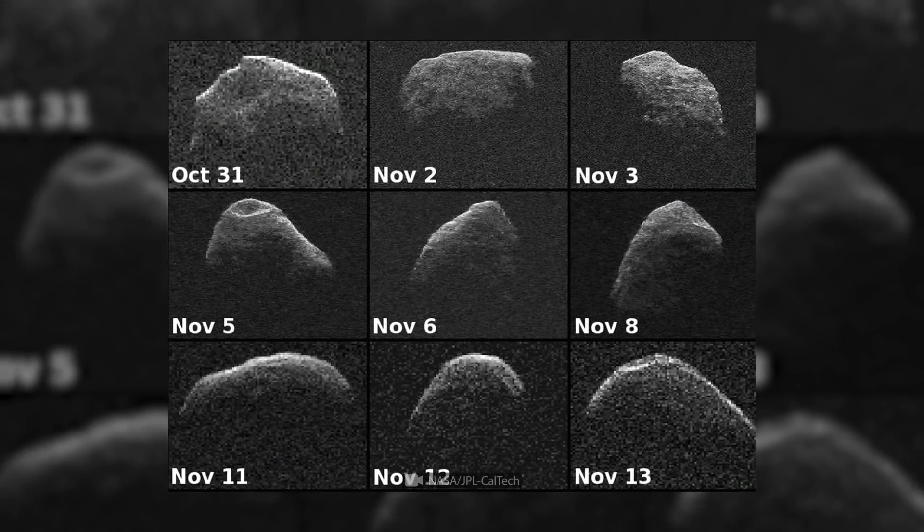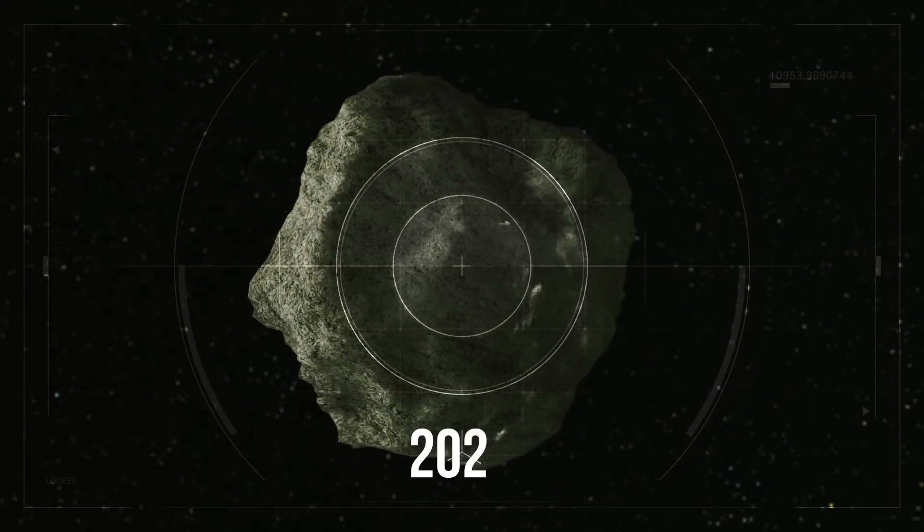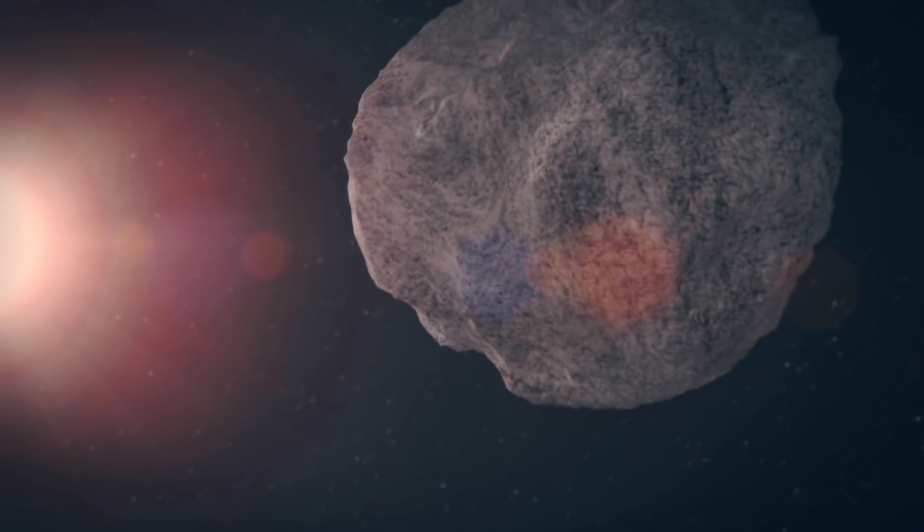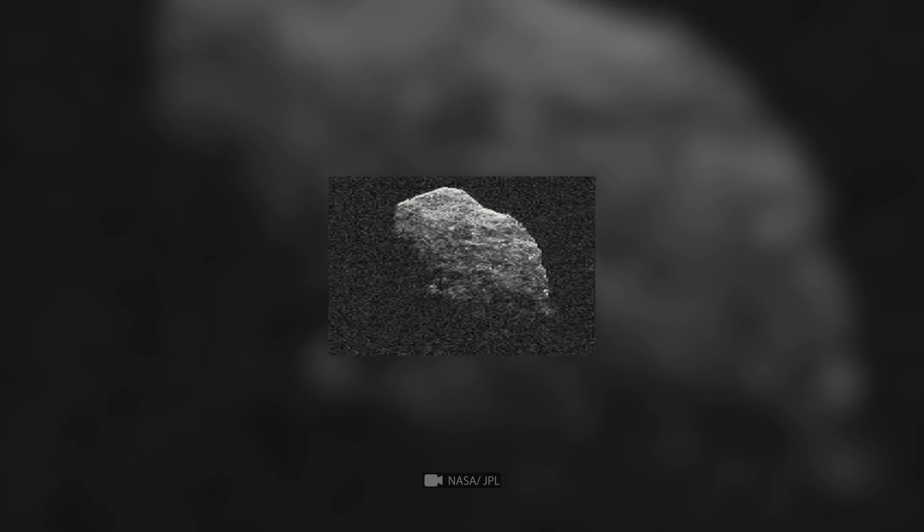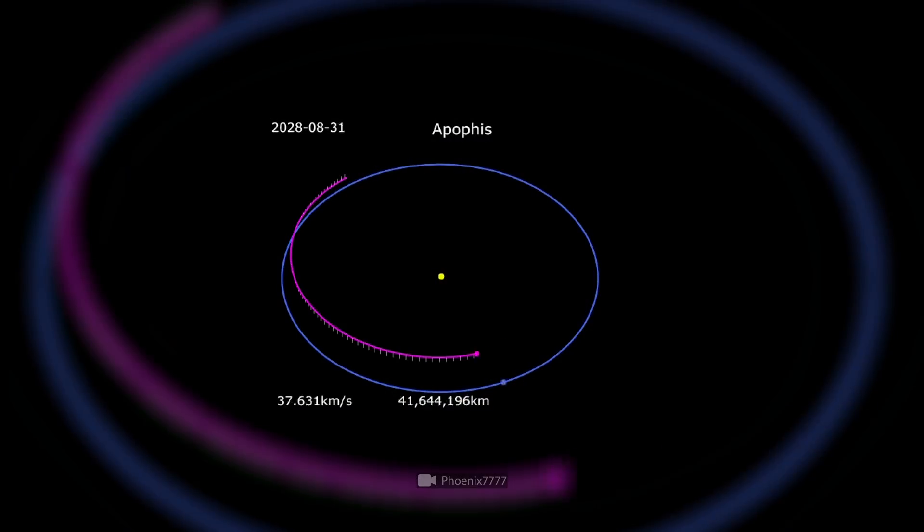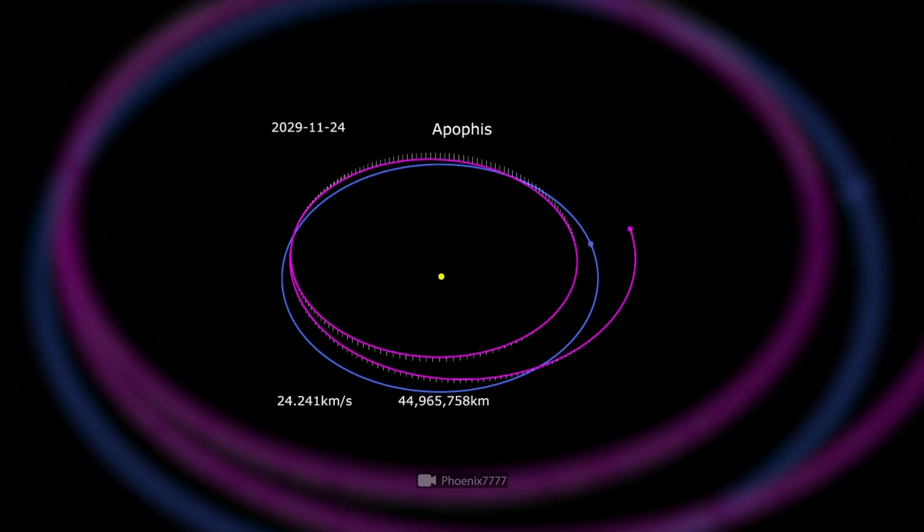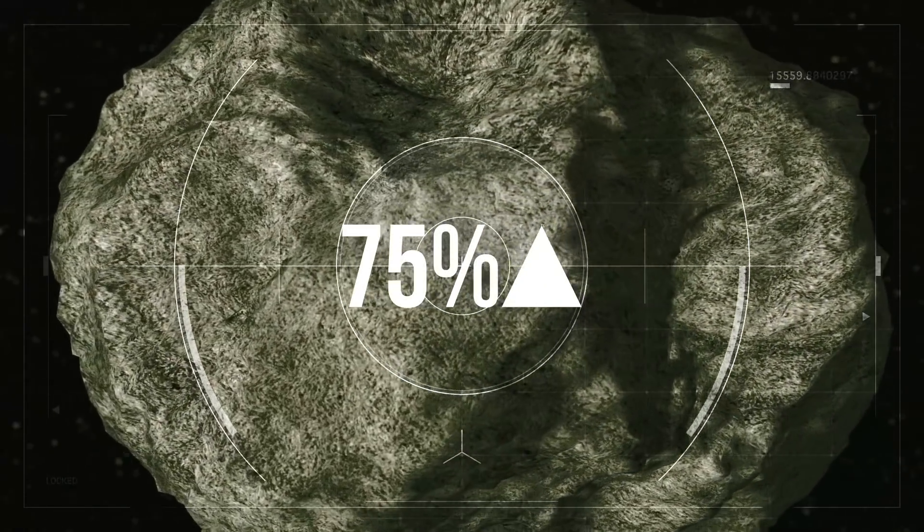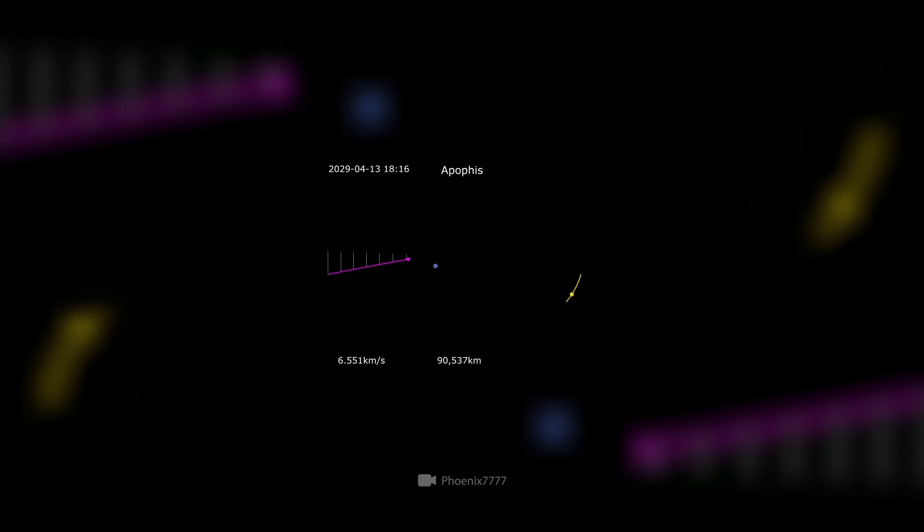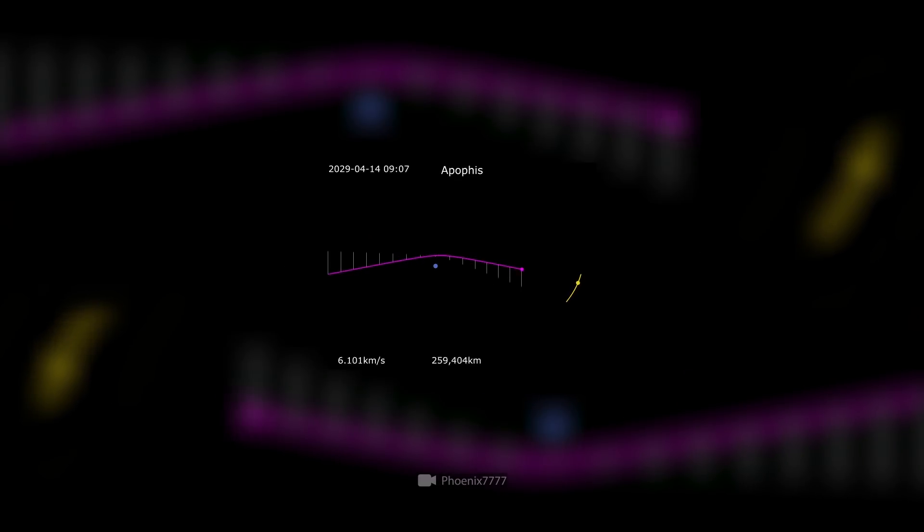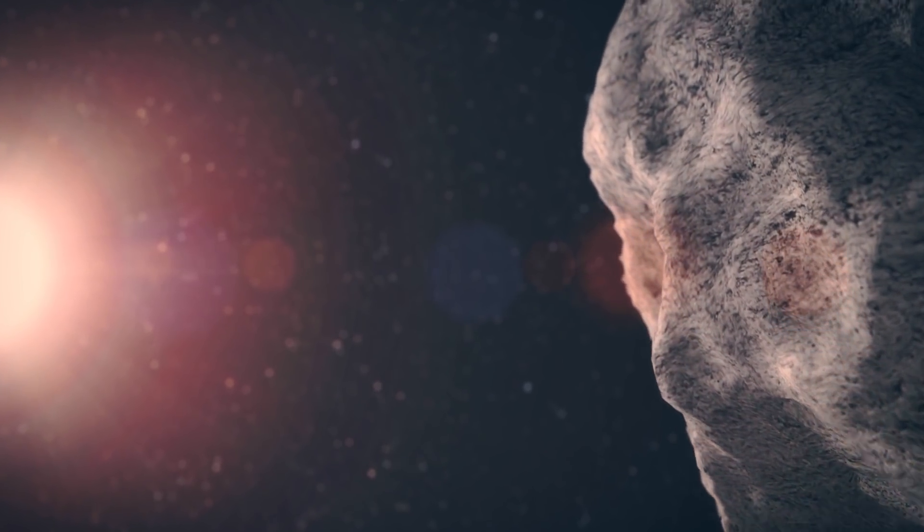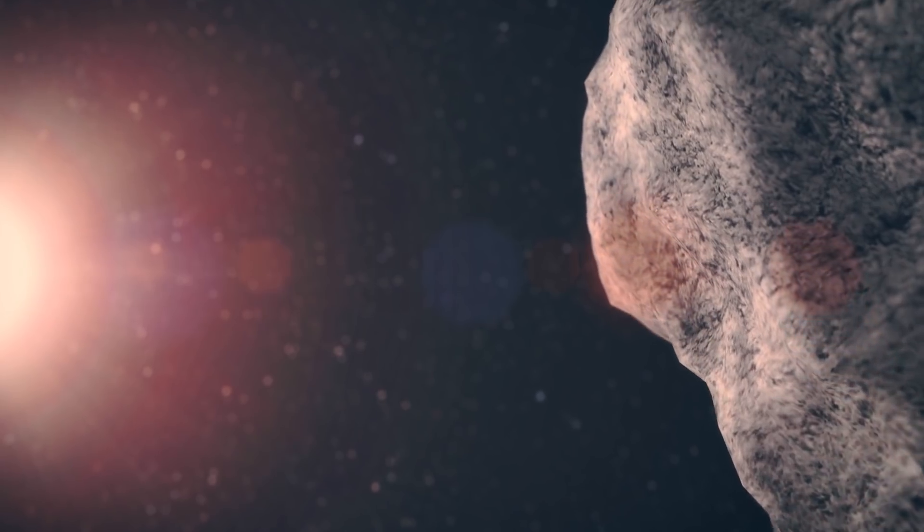While that time it flew past us, scientists say that when it returns in 2029 and 2036, our planet will also not be in danger. But here's a small surprise. In its last approach, it was suddenly discovered that its mass is 75% greater than previously thought. Think about how much trust we should put into our calculations of its orbit if we can't determine even such physical dimensions of this potential destroyer of humanity.